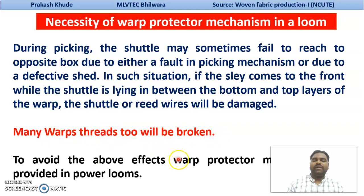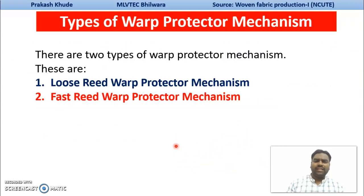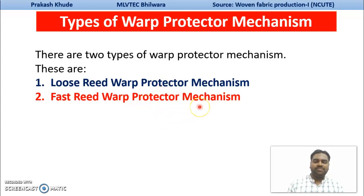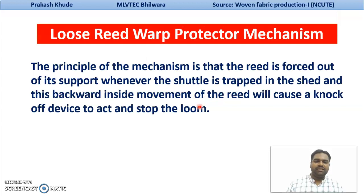To avoid these effects, the warp protector mechanism has been provided on your loom. There are two basic types of warp protector mechanism: one is your loose reed and second is your fast reed warp protector mechanism. We will discuss only in this lecture about the loose reed warp protector mechanisms.